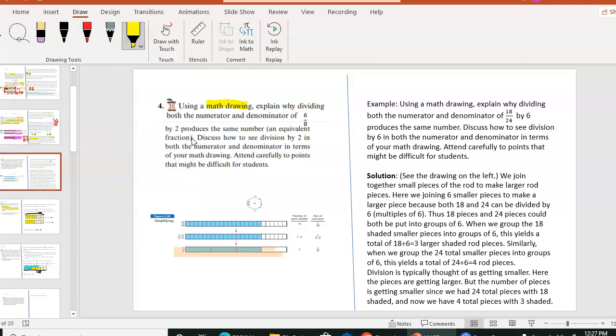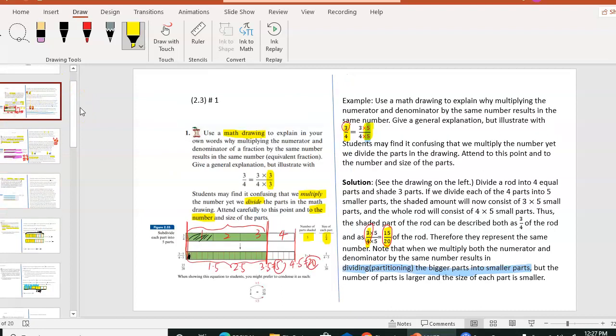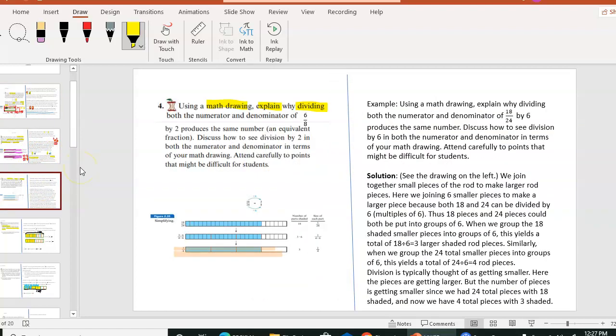Discuss how to see division by 2. So first of all, we have to have a math drawing and use the math drawing to explain why dividing. Notice this is actually very similar to the first two problems we did. The first problem we did was multiplying a number, multiply by 3 or multiply by 5. But in this case, it's not multiplying by a number, it's dividing. So for example, in your case, you're dividing 6 and 8 both by 2.